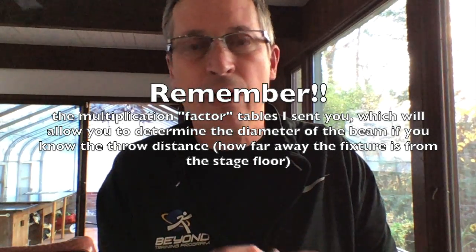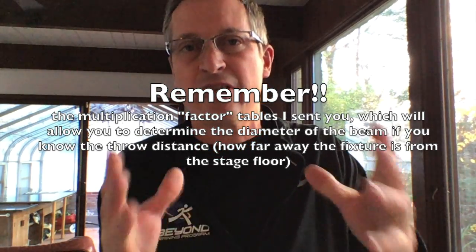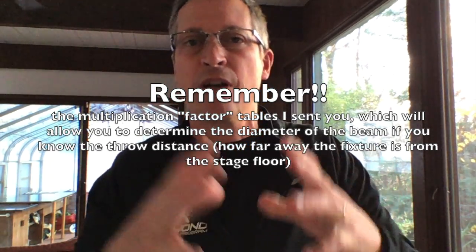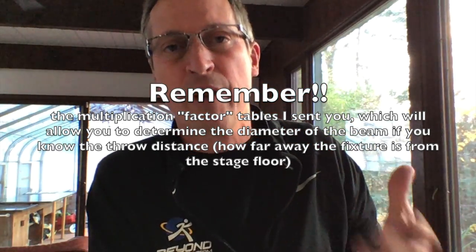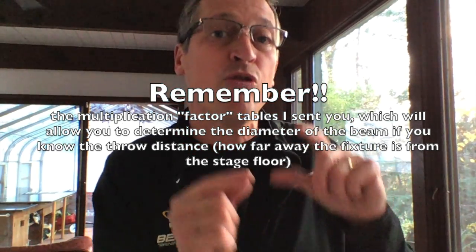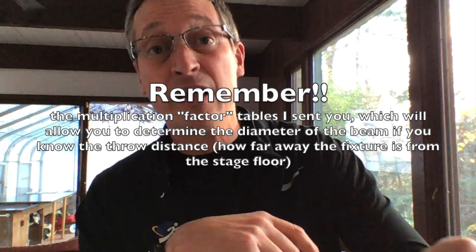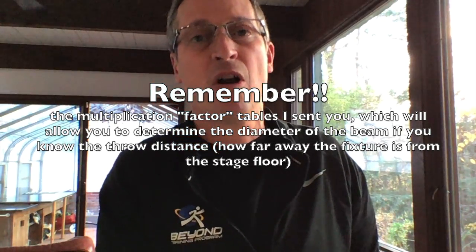If you recall, I said that if you work about two catwalks back and use a 26-degree ellipsoidal at about a 30 to 40-degree angle coming into the stage, that's a really great place for light. I'm going to send you the repertory light plot of the Nelda K. Baltz Playhouse so you can see that. A 19-degree light made a six-foot circle, and a 26-degree light made an 11-foot circle.